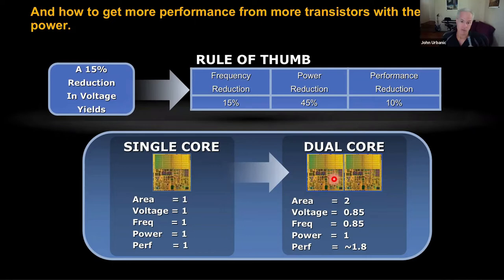Cell phones today all have multiple cores. If you buy the latest greatest cell phone, it will be Apple and Samsung competing over who's got more cores on their processor. This is where that comes from — it comes from the requirement that engineers couldn't just keep cranking up the clock speeds. For the same power, they could run more cores at a slightly reduced performance per core but get more total speed.